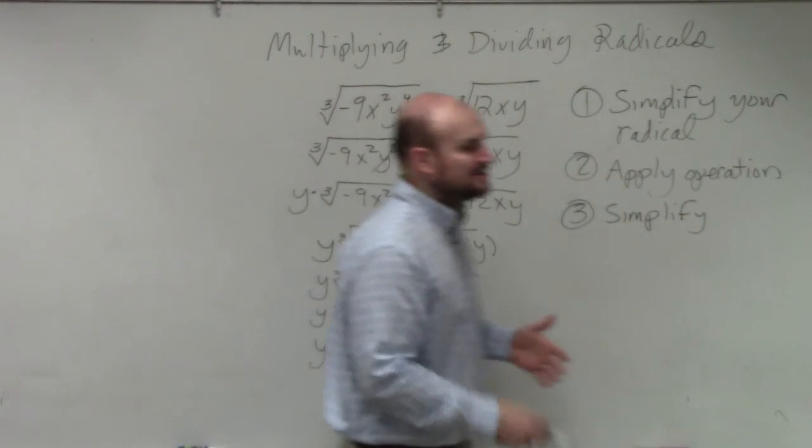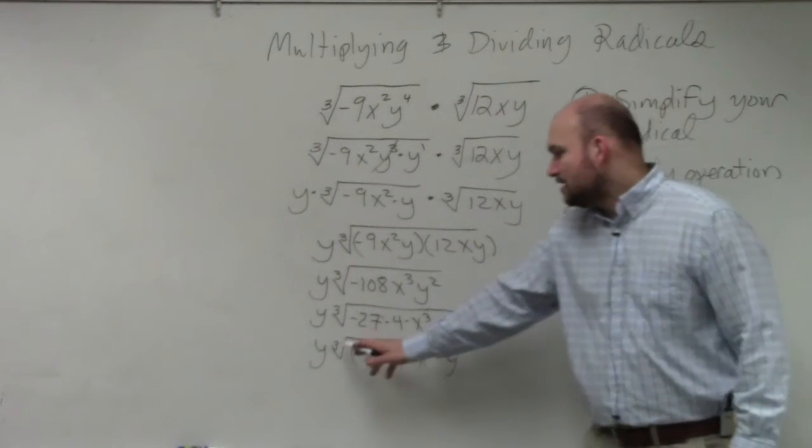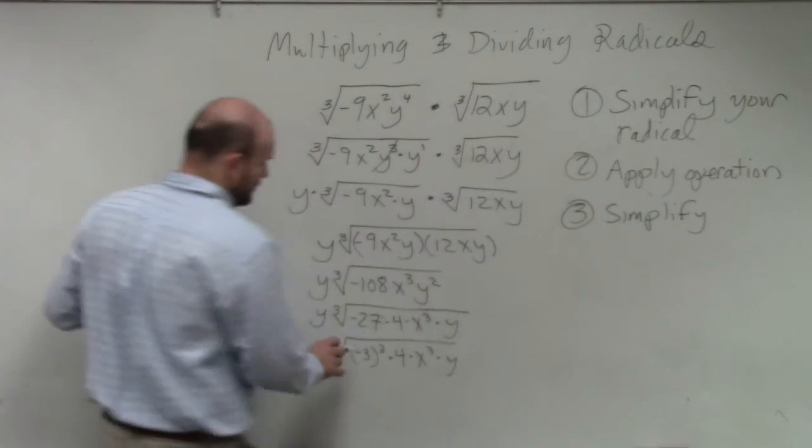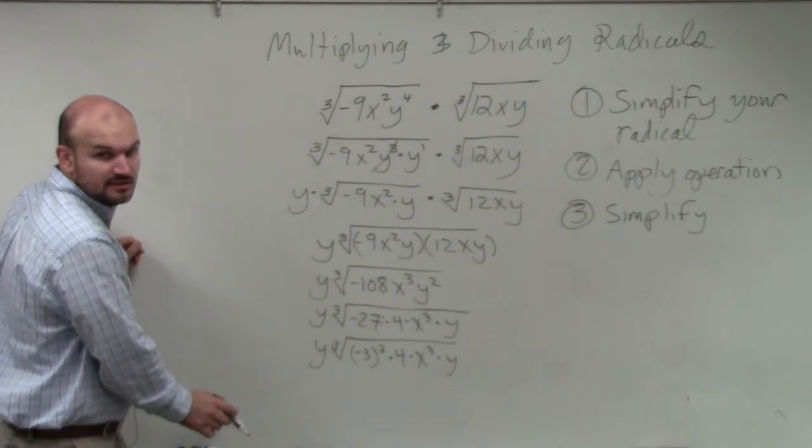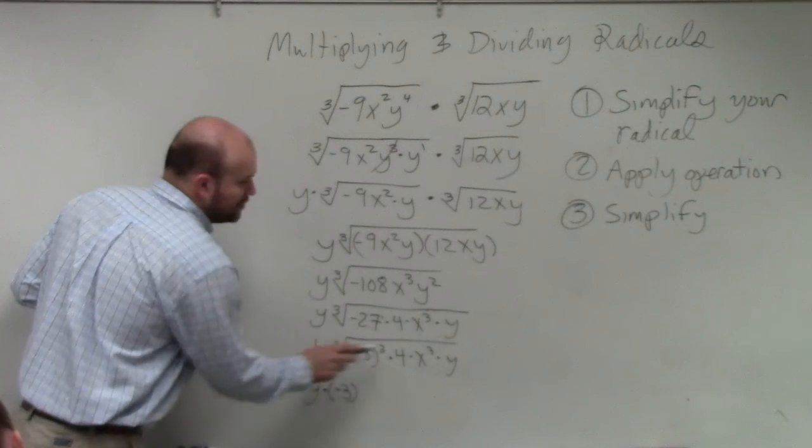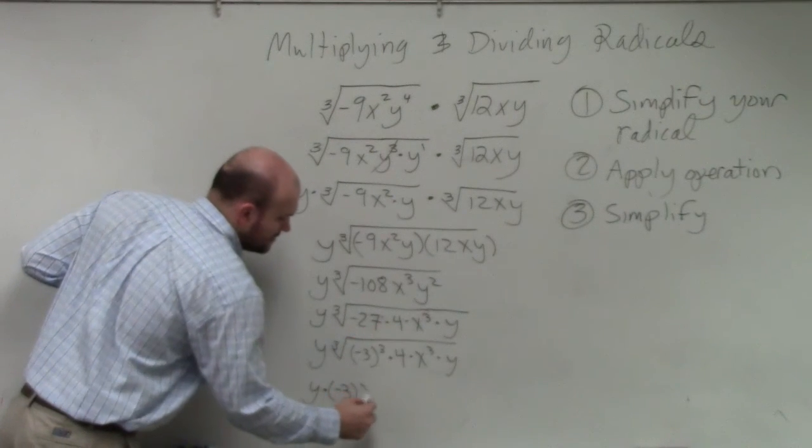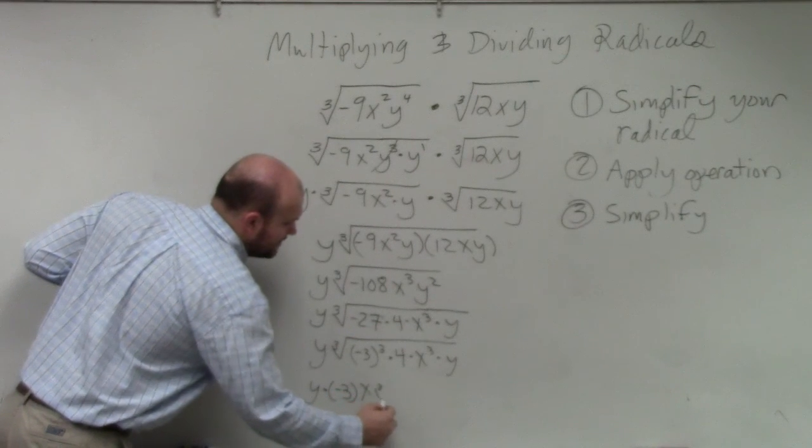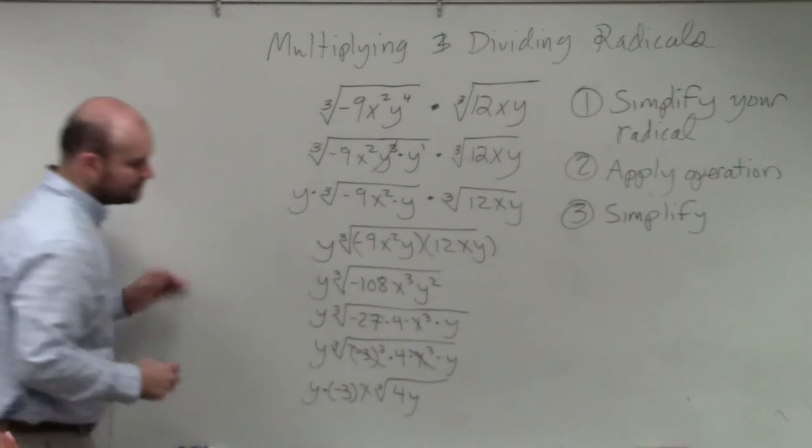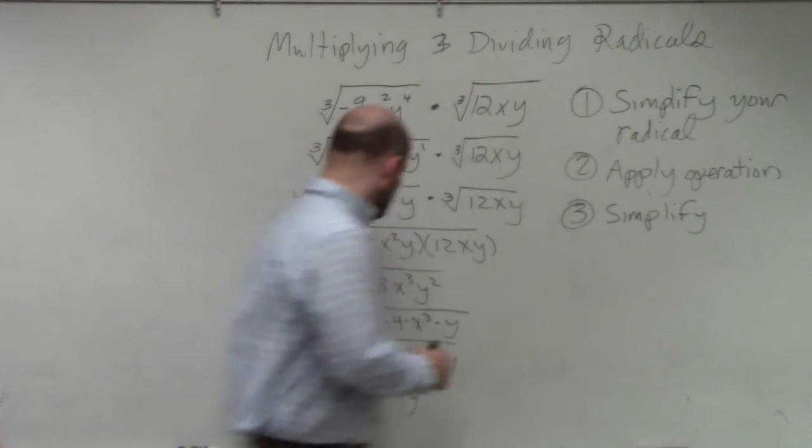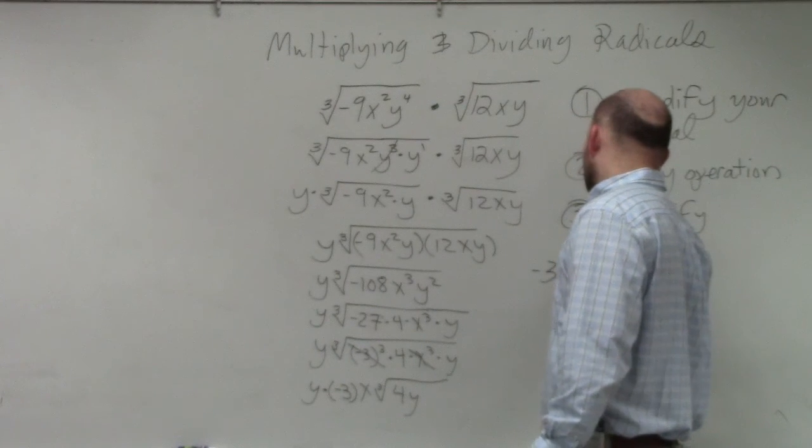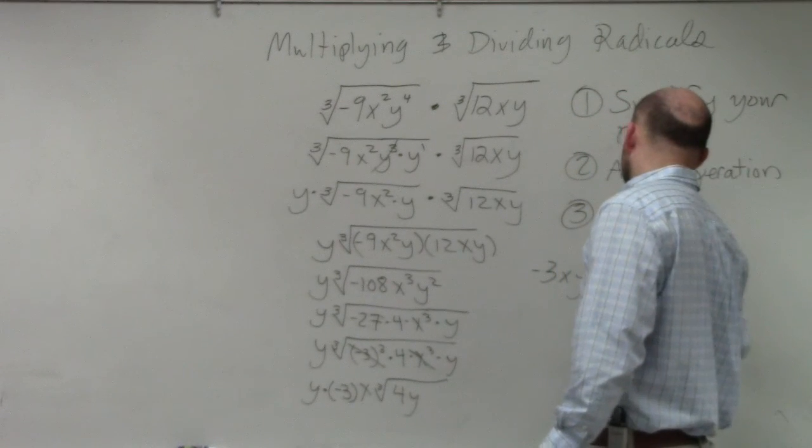I'm writing out a lot of steps. You guys won't need to write all these steps. But I wanted to show this because the cube root of negative 3 cubed is just negative 3. So I have y times negative 3. The cube root of x cubed is x. And then can I take the cube root of any other term? So I'm left with 4y squared. So the answer I write as negative 3xy times the cube root of 4y squared.